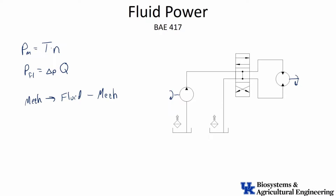There is a close analogy between fluid power systems and electronic circuits. Fluid flowing through a pipe is easier to picture than electrons flowing through a wire, but the context is very similar. Resistance downstream causes pressure build-up — pressure is like voltage, and the load on the motor determines current or flow. We can even have capacitive-type elements in a fluid power system that store energy.